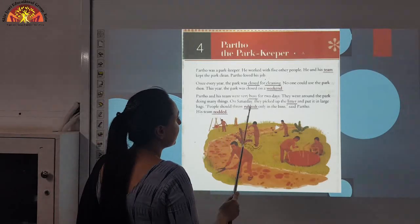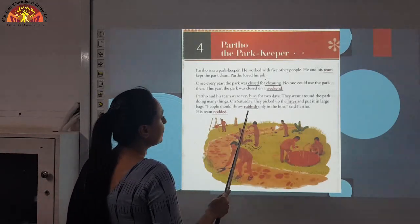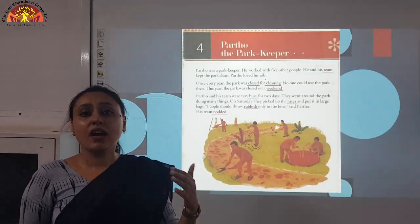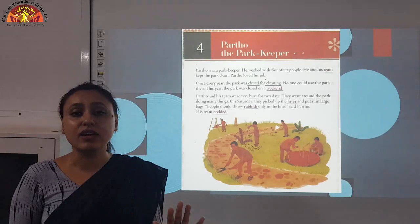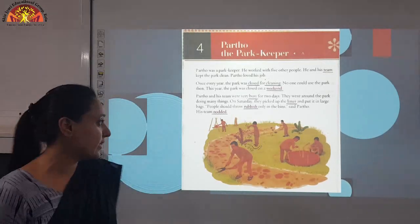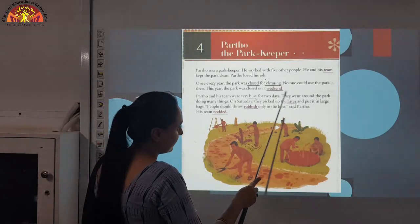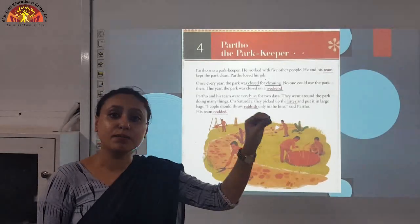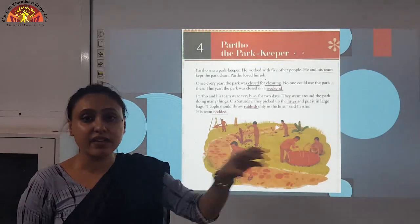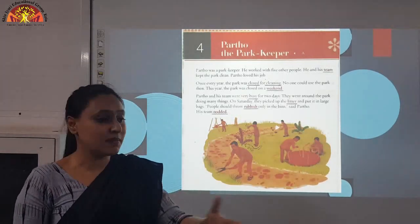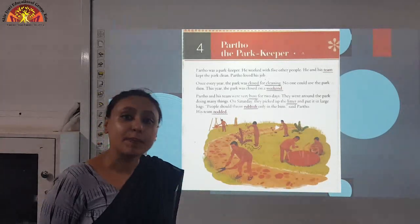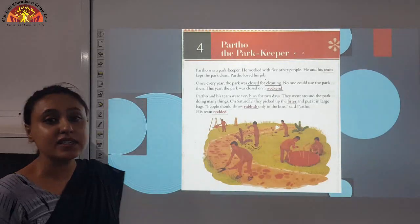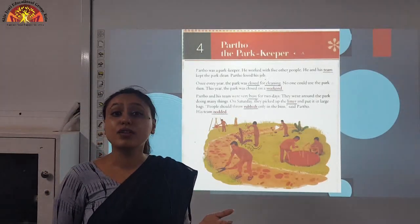People should throw rubbish only in the bins, said Partho. Underline the word R-U-B-B-I-S-H, rubbish. Rubbish means the unwanted things that people don't need. Partho said that people should always throw their rubbish in the bins — we should not throw our rubbish here and there in the park, it will make it dirty. His team nodded. Underline the word N-O-D-D-E-D, nodded. Nodded means to move your head up and down in order to say yes.